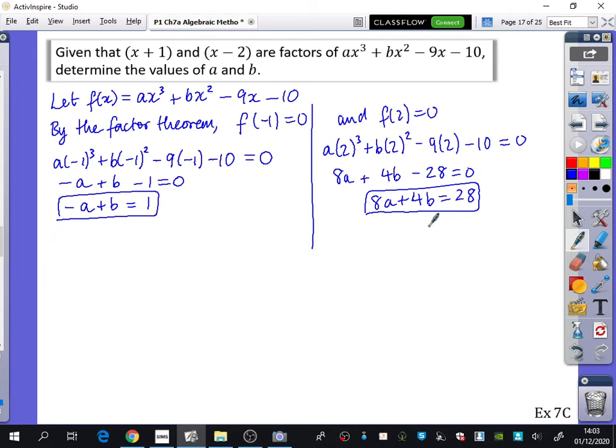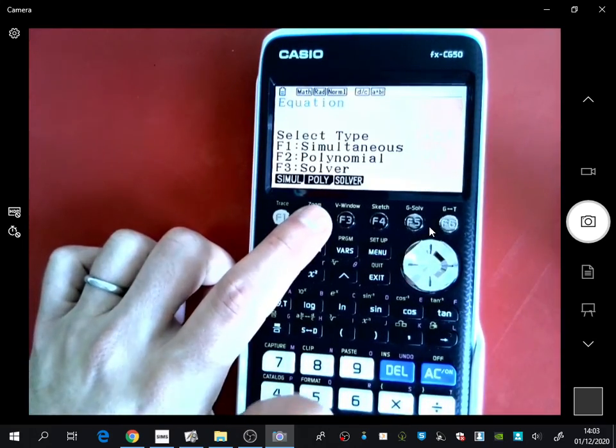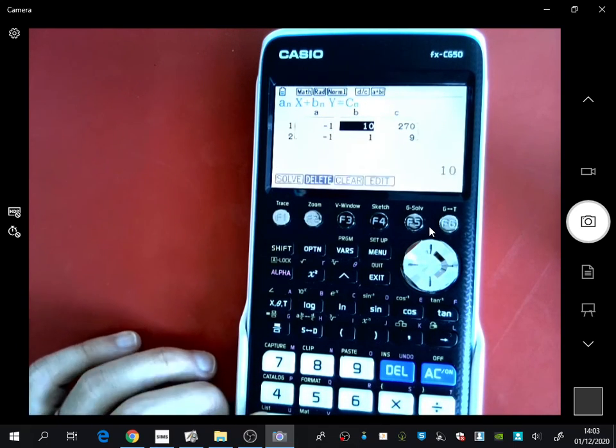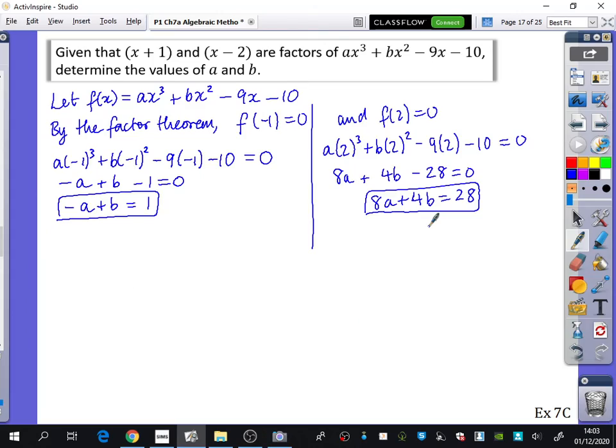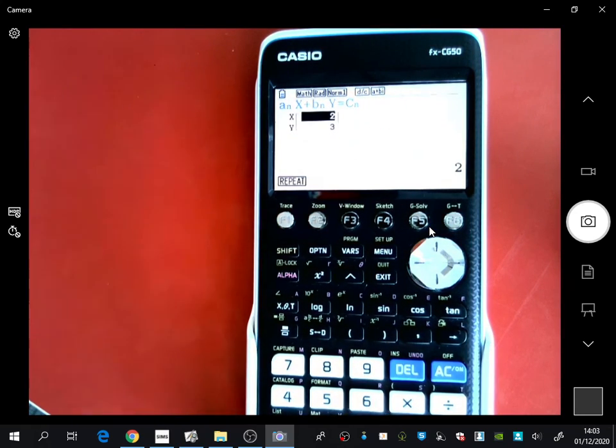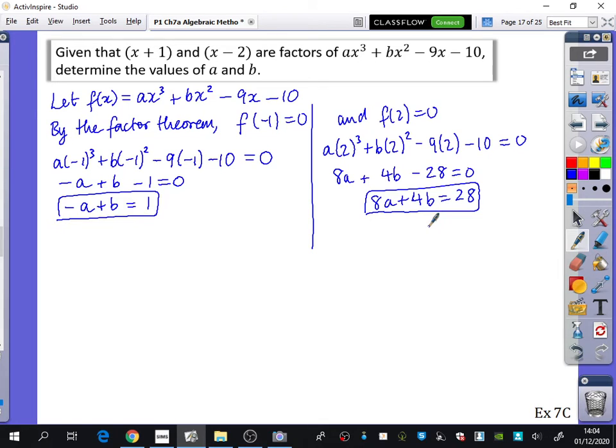You will have a feature on your calculators. There is a feature on the calculator that will allow you to solve these straight away. You'll go to simultaneous. There are two unknowns. In the first one was -a + b = 1. And on the second one, it is 8a + 4b = 28. You're allowed to do this in the exam. You just press solve, and it immediately tells you. It says x and y, but we know that corresponds to a and b. That means a = 2 and b = 3.